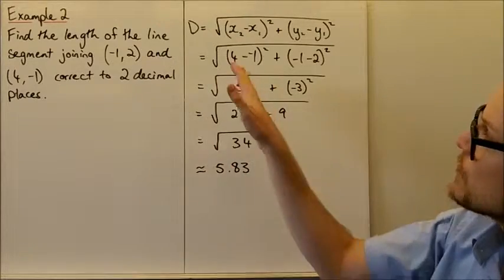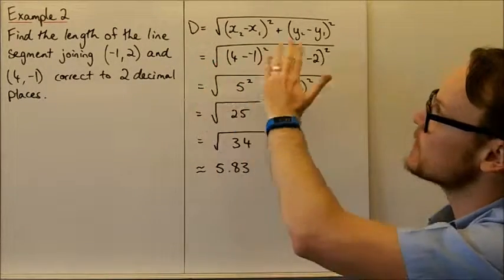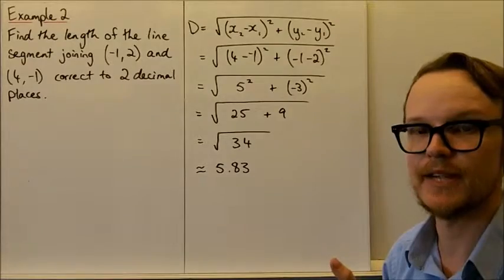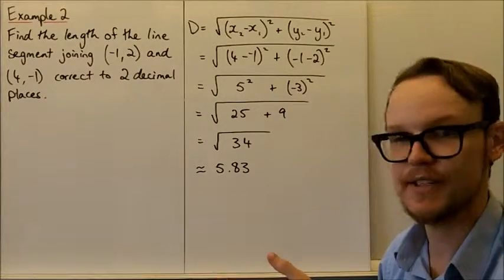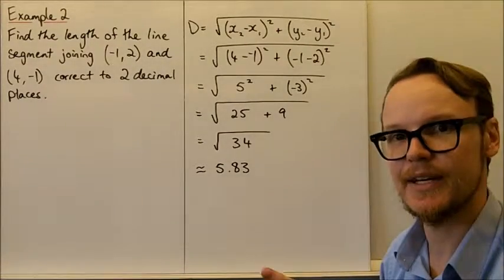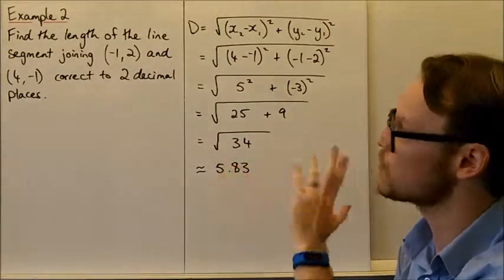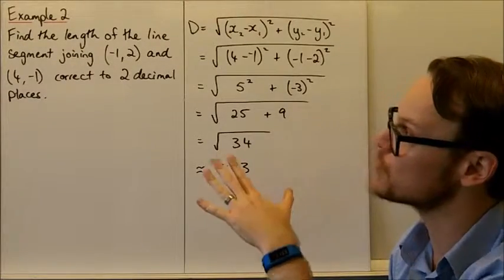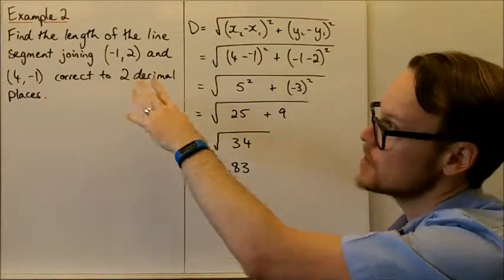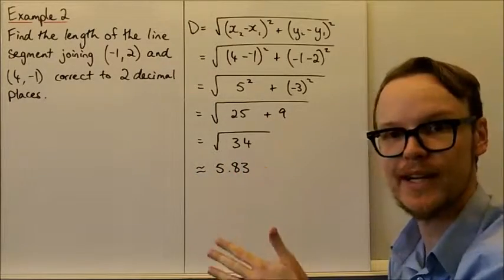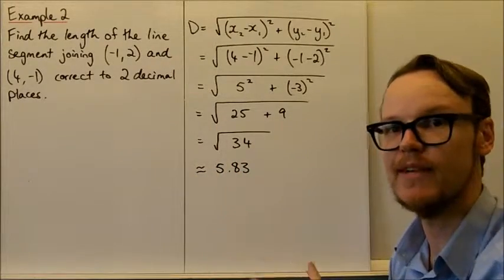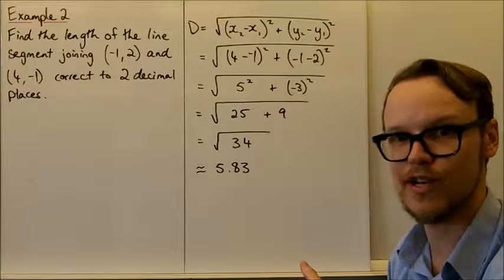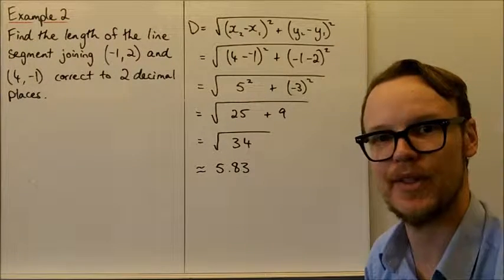Just remember, when using this formula, all we're doing is applying Pythagoras' theorem. If you're having difficulty remembering the formula, all you need to do is draw a diagram, plot the points on a Cartesian plane, draw out a right-angled triangle from that, and then use Pythagoras' theorem to solve it.